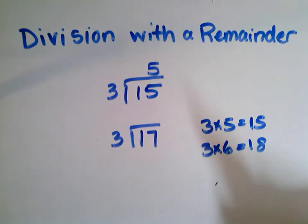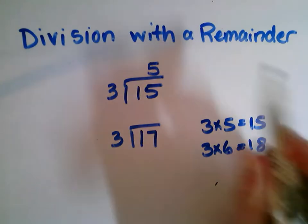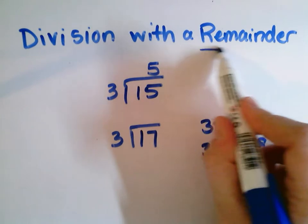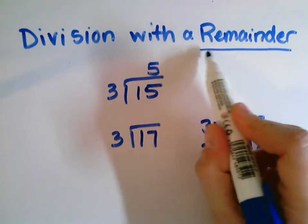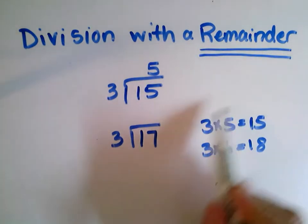It's not going to go in evenly. So sometimes when we divide, we might have something left over, and that's called a remainder — it's the amount that's left over. Let me draw a picture of 17 divided by 3.